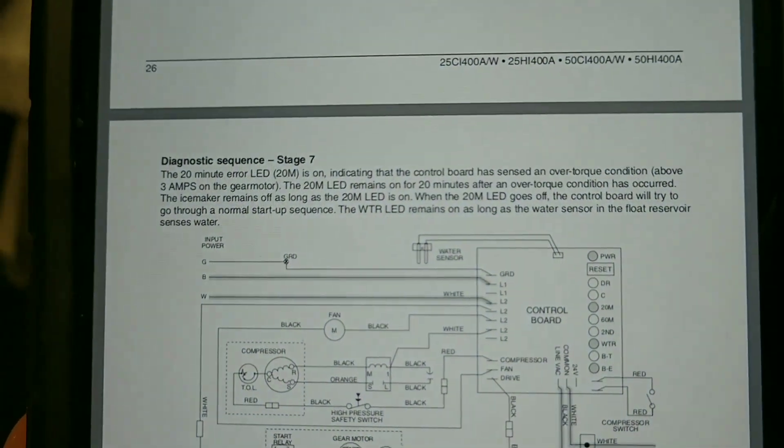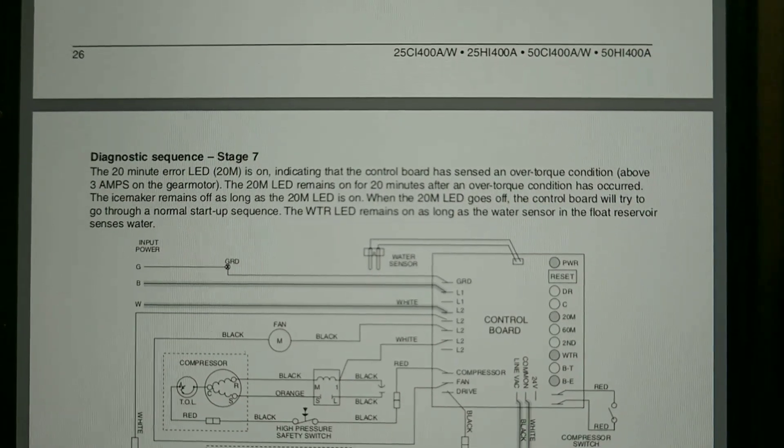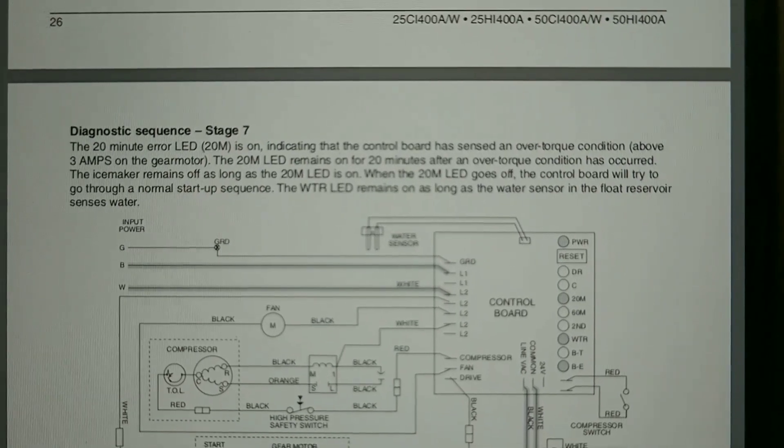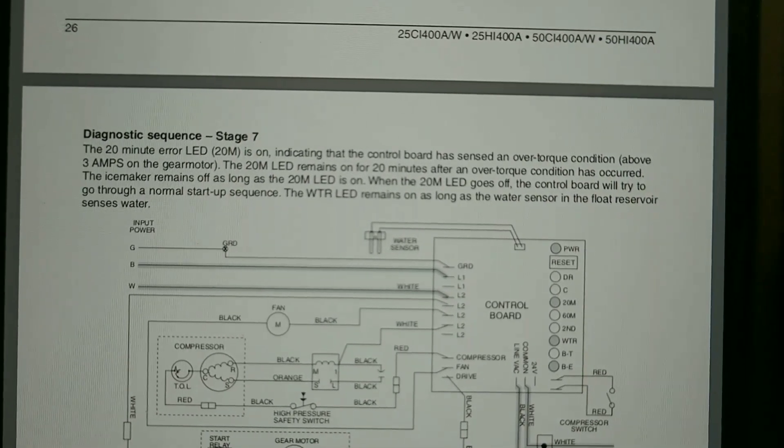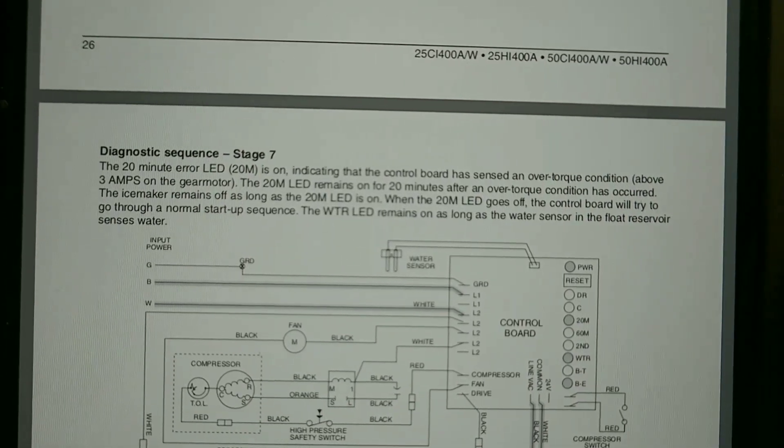Let me see if I can get this in here so you guys can read that on your own. Pretty much says that the 20m light will come on indicating that the control board senses an over torque in the gear motor.